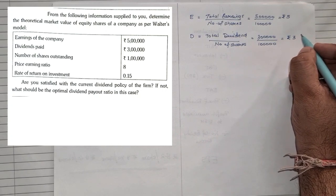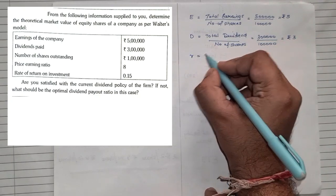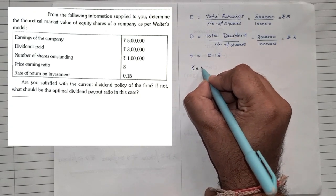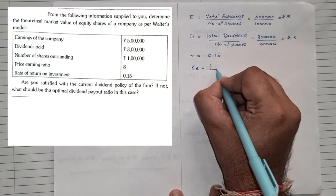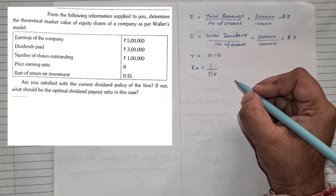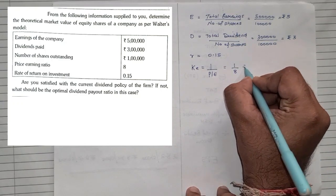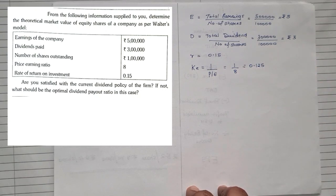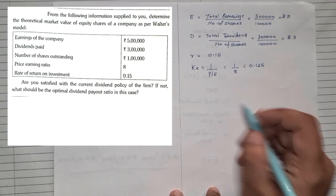They are giving us the rate of return R directly, that is 15%, which is 0.15. The last thing we require is cost of capital KE. They haven't given it directly, so we use the formula: cost of capital equals 1 upon price earning ratio. In the question, the price earning ratio is 8, so it will be 1 divided by 8, which comes to 0.125.